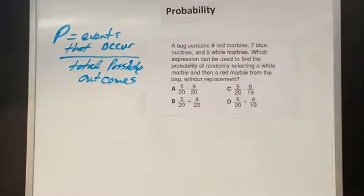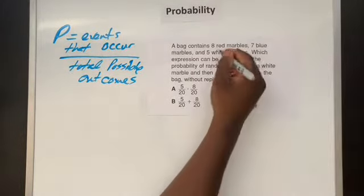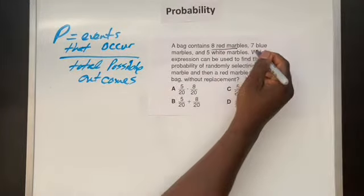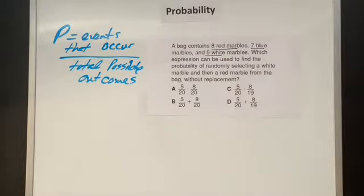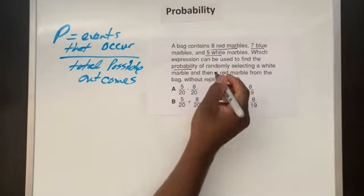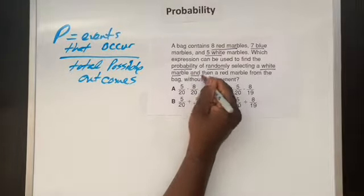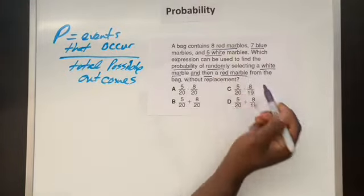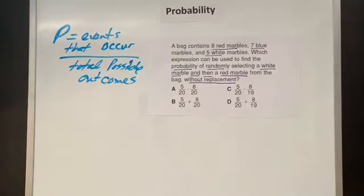This time we're going to be dealing with marbles. So it says a bag contains eight red marbles, I'm just going to underline key information, seven blue marbles, and five white marbles. Which expression can be used to find the probability of randomly selecting a white marble and then a red marble from a bag without replacement. So notice we have four different expressions in this multiple choice problem, but only one is correct.